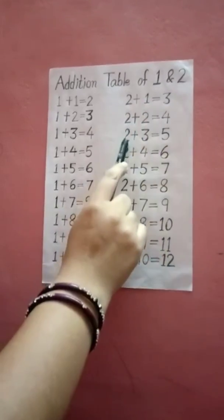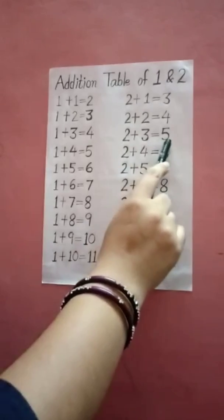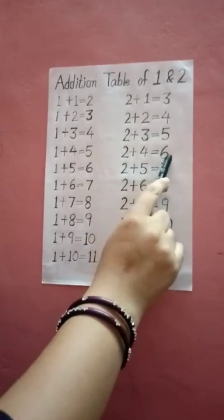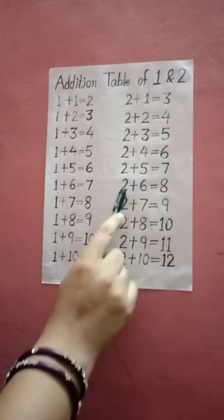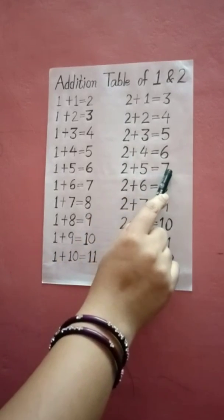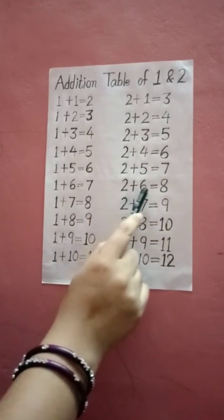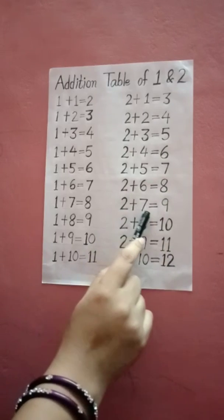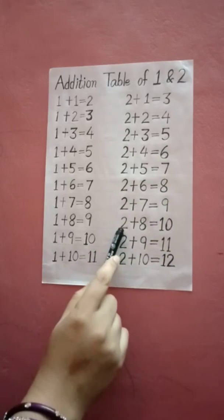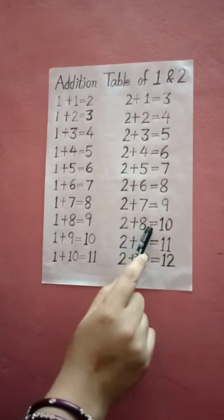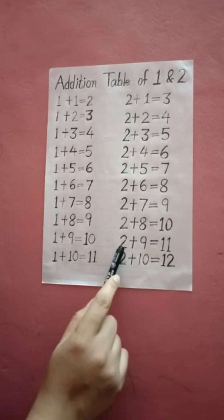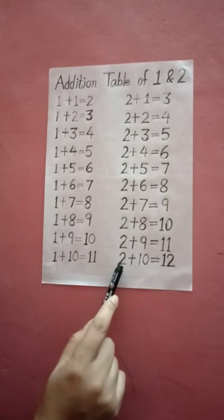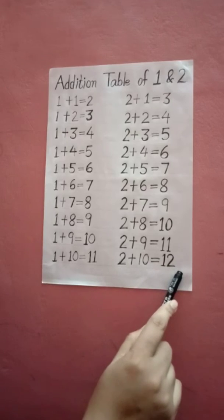2 plus 2 equals 4, 2 plus 3 equals 5, 2 plus 4 equals 6, 2 plus 5 equals 7, 2 plus 6 equals 8, 2 plus 7 equals 9, 2 plus 8 equals 10, 2 plus 9 equals 11, and 2 plus 10 equals 12.